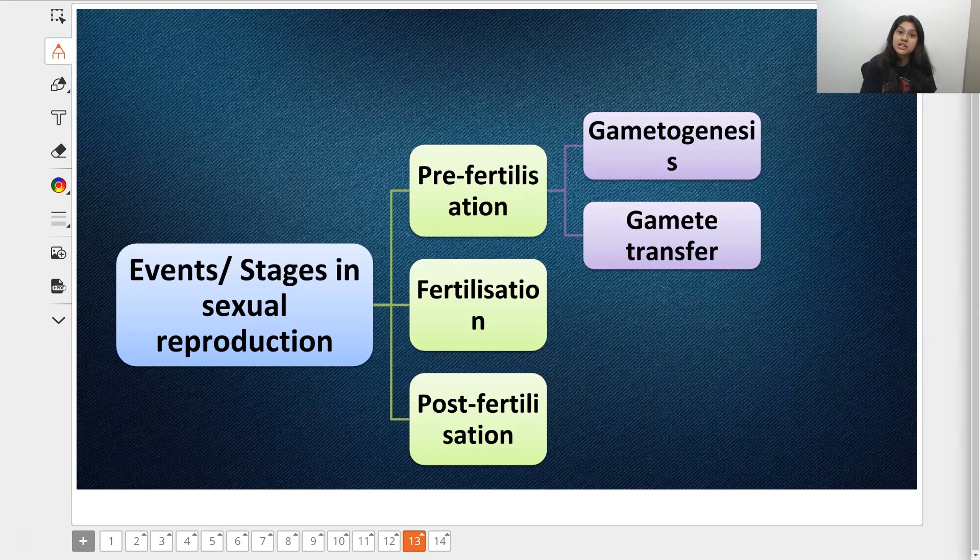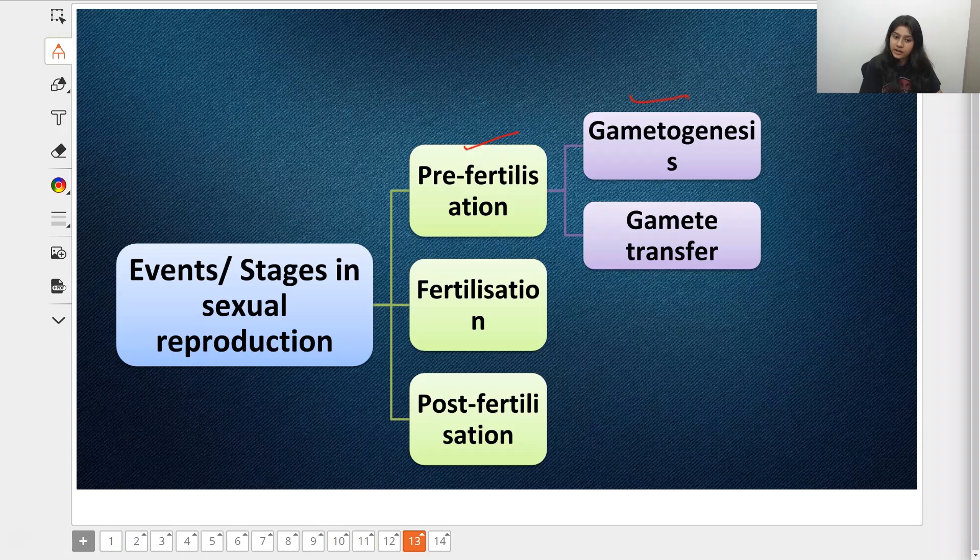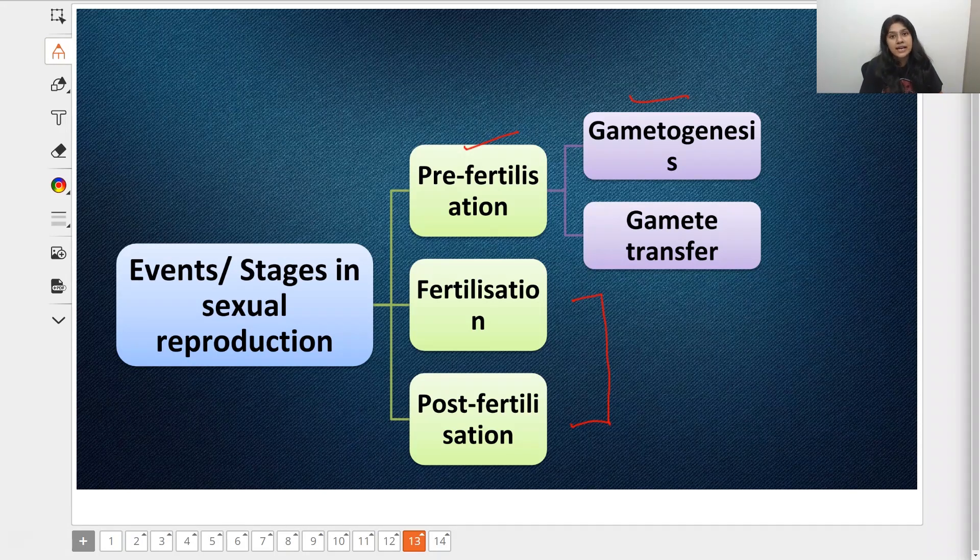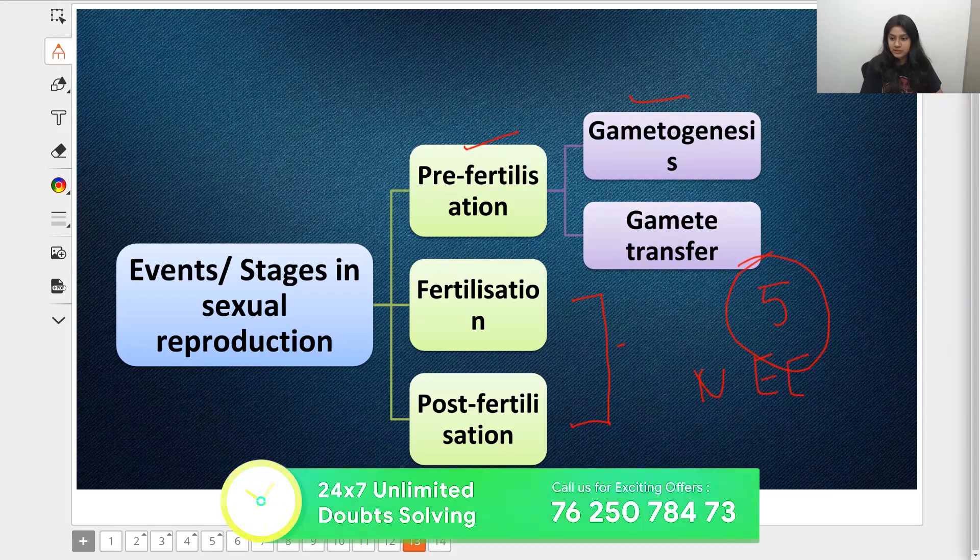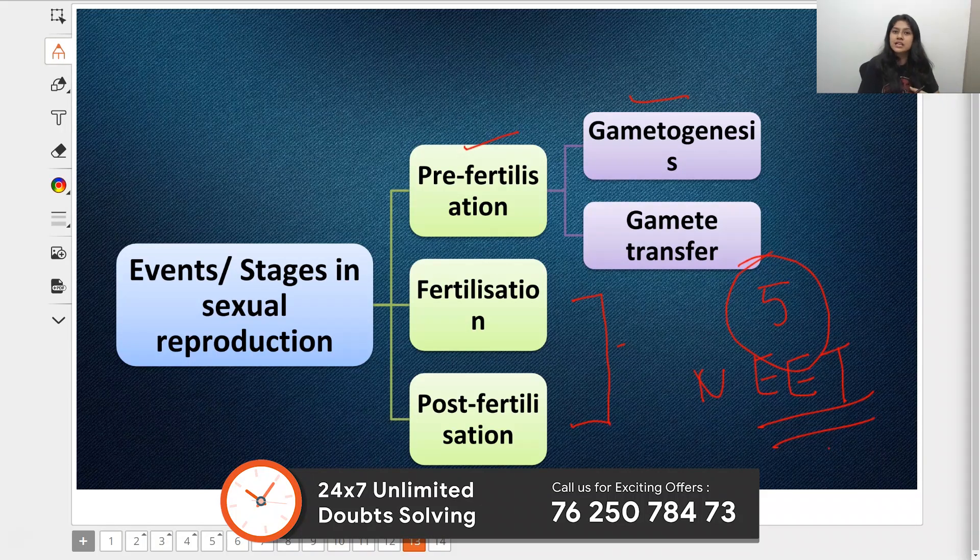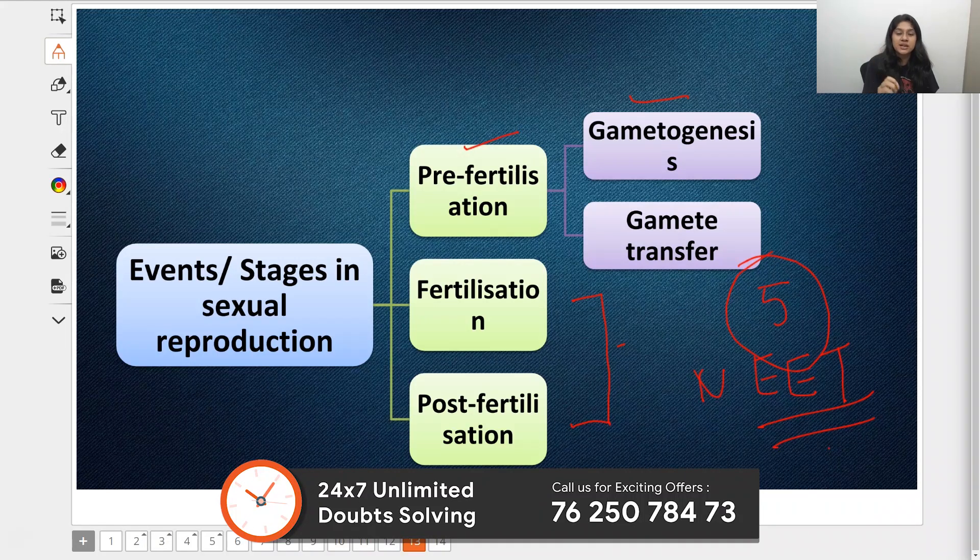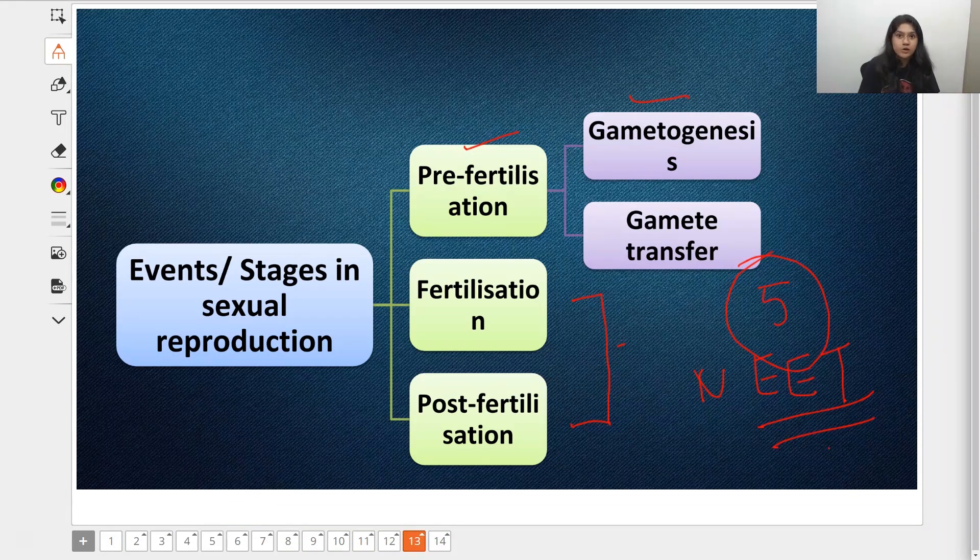This was the end of Part 2. In the next Part 3, we'll discuss the stages of sexual reproduction - pre-fertilization and gametogenesis. In Part 4, we'll talk about fertilization and post-fertilization. The fifth video will be about NEET questions. That's how I've planned this whole chapter for you. Do tell me if you need any changes by commenting in the chat box.